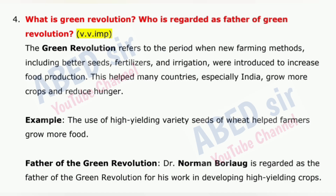Next important question is 4: What is the green revolution, and who is regarded as the father of the green revolution? The green revolution refers to the period when new farming methods, including better seeds, fertilizers, and irrigation, were introduced to increase food production. This helped many countries, especially India, grow more crops and reduce hunger. For example, the use of high-yielding variety seeds of wheat helped farmers grow more food. The father of the green revolution, Dr. Norman Borlaug, is regarded as such for his work in developing high-yielding crops.